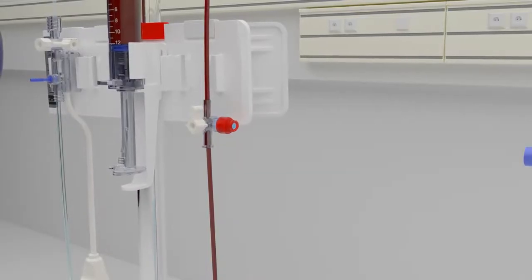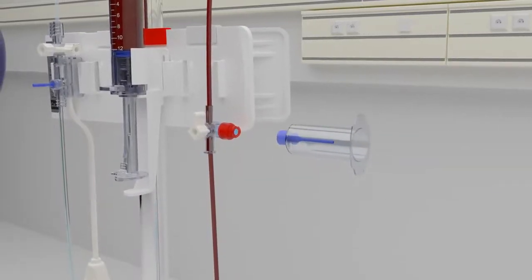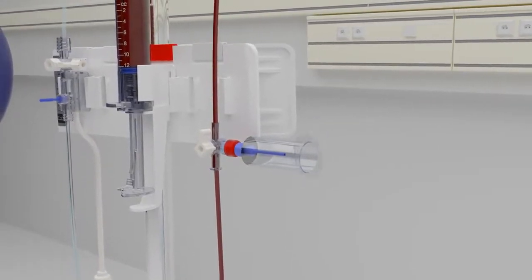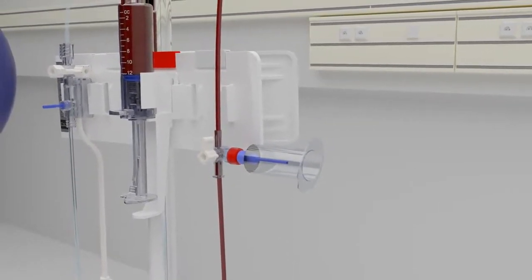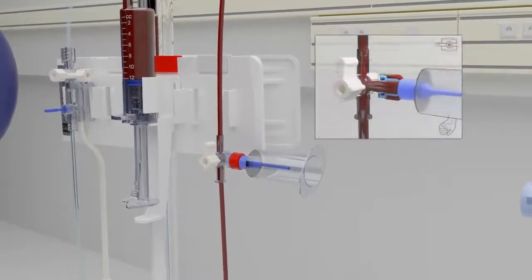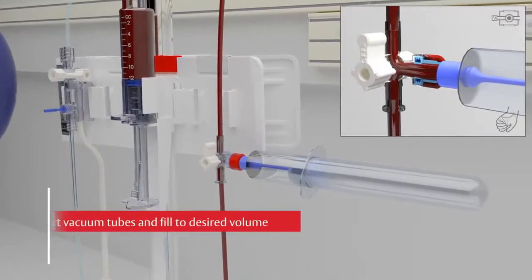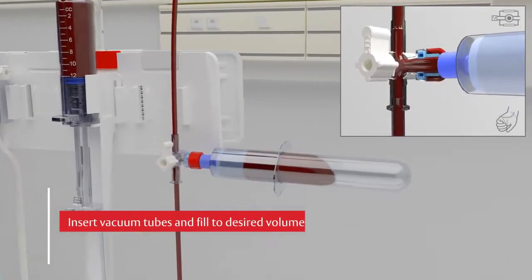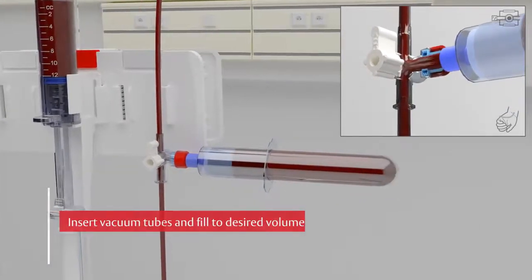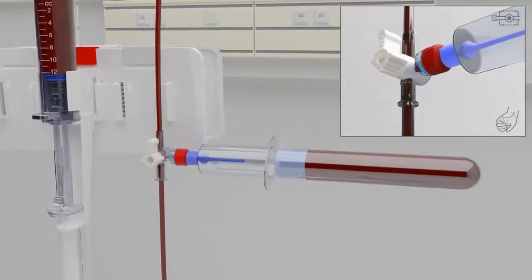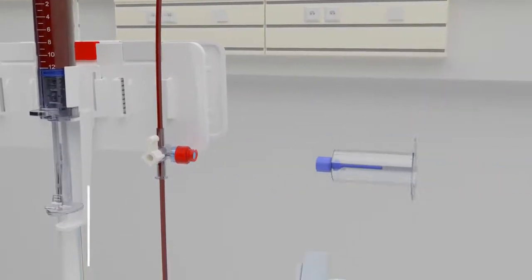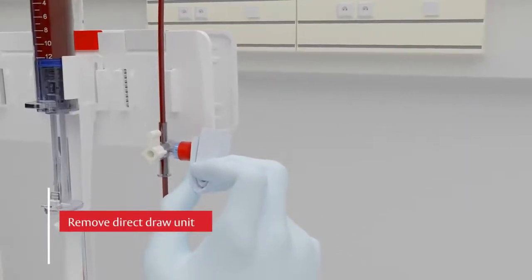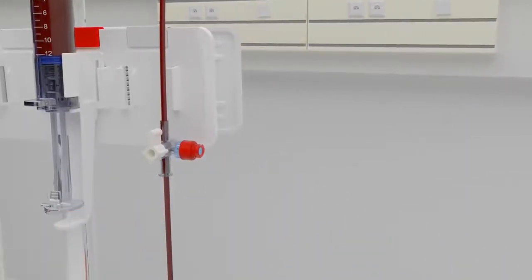Carefully connect a lure locking direct draw unit to the sample site by slowly pushing it straight into the site using a clockwise rotating motion until it is fully seated. Insert the vacuum tube into the direct draw unit and fill to desired volume. Fill additional vacutainer tubes as needed. When the last sample is drawn, remove the direct draw unit from the sample site rotating counterclockwise and discard the unit according to hospital policy.